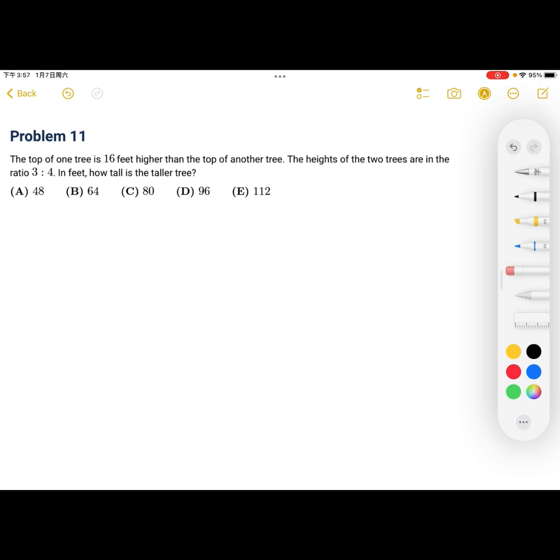The top of one tree is 16 feet higher than the top of another tree. The heights of the two trees are in the ratio of 3 to 4. In feet, how tall is the taller tree?